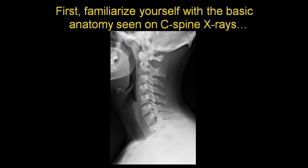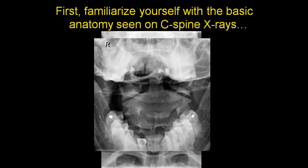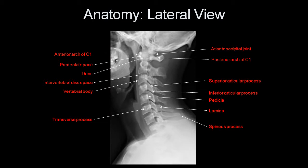It's very important to familiarize yourself with the basic anatomy seen on cervical spine x-rays, including the lateral, AP, and odontoid views. On the lateral view, be aware of the anterior arch of the C1 vertebral body, the pre-dental space between the anterior arch of C1 and the dens, the intervertebral disc spaces, vertebral bodies, transverse processes, spinous processes, lamina, pedicles, inferior and superior articular processes, the atlanto-occipital joint, and the posterior arch of C1. Remember that the first fully formed vertebral body you see is C2, not C1.